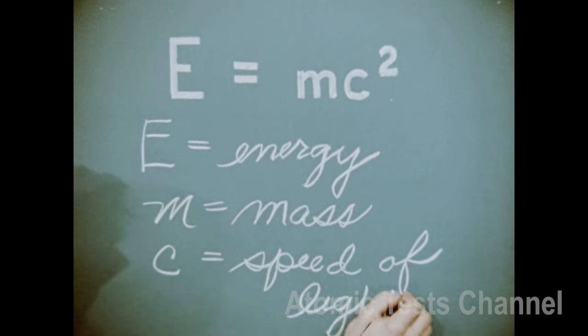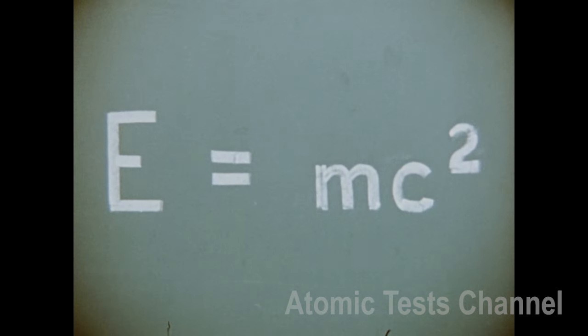Since the speed of light is expressed in very large numbers, approximately 30 billion centimeters per second or 186,000 miles per second, it is evident by this equation that even a small mass can be converted under the right circumstances into a tremendous amount of energy.